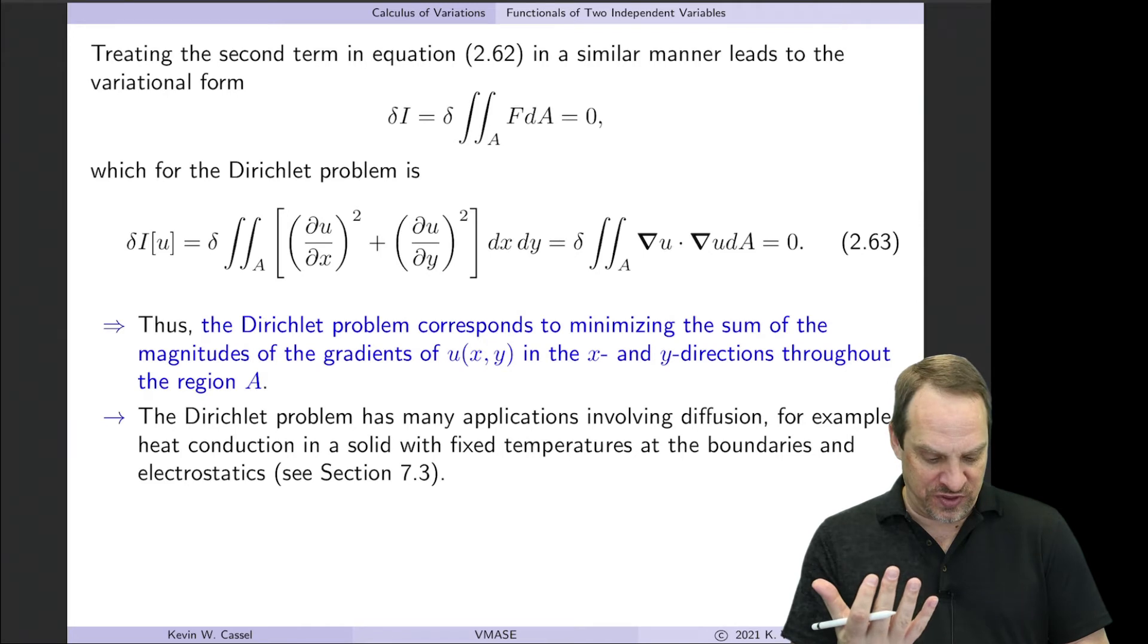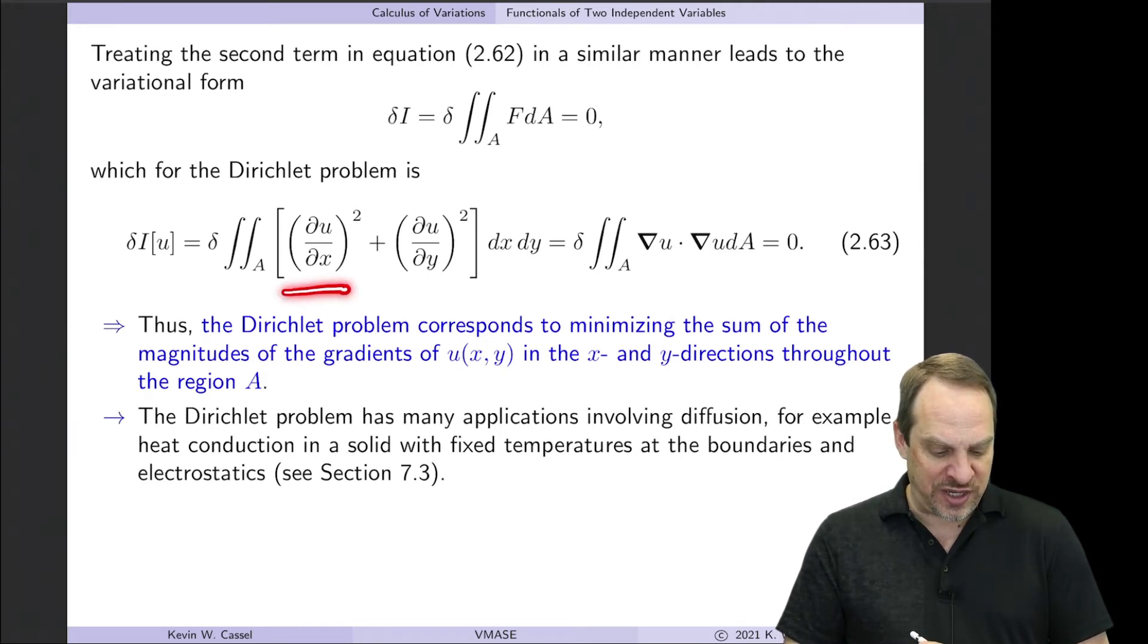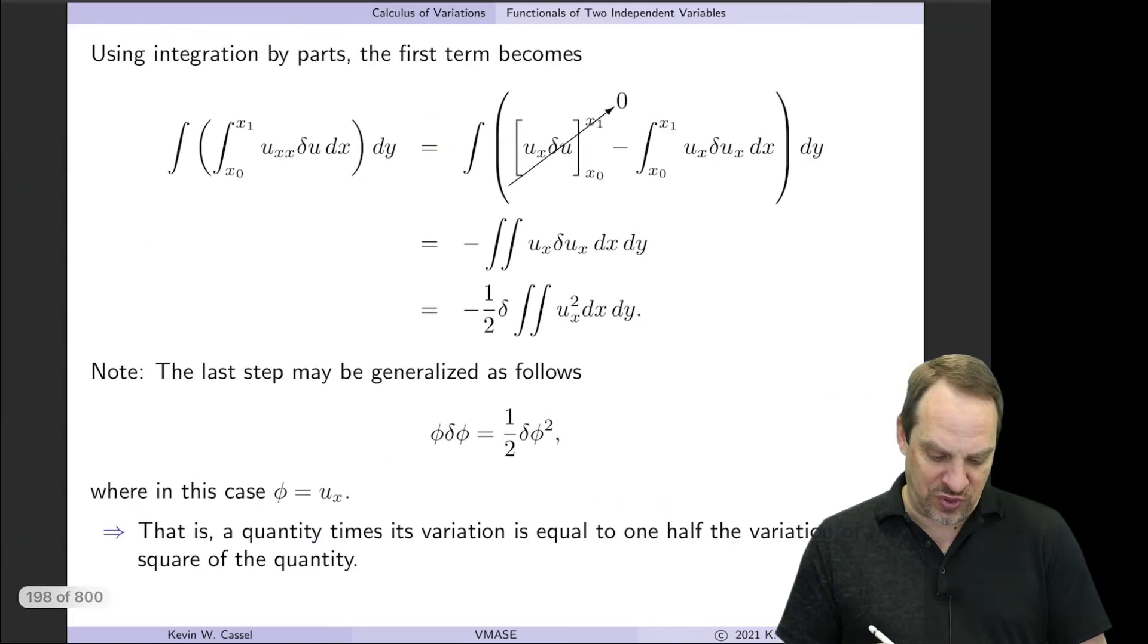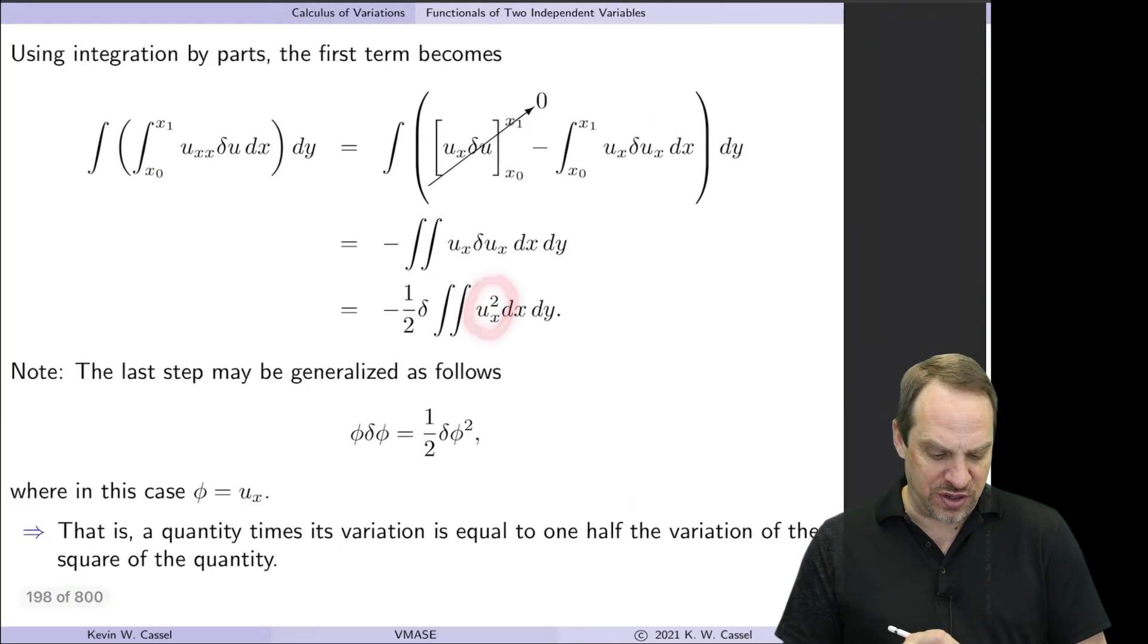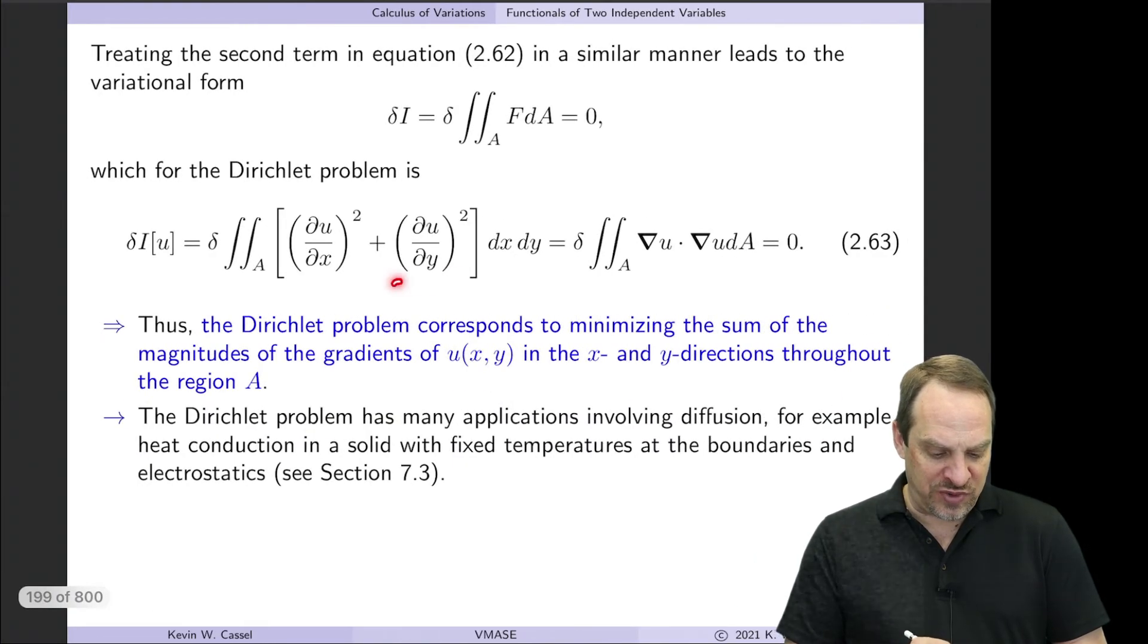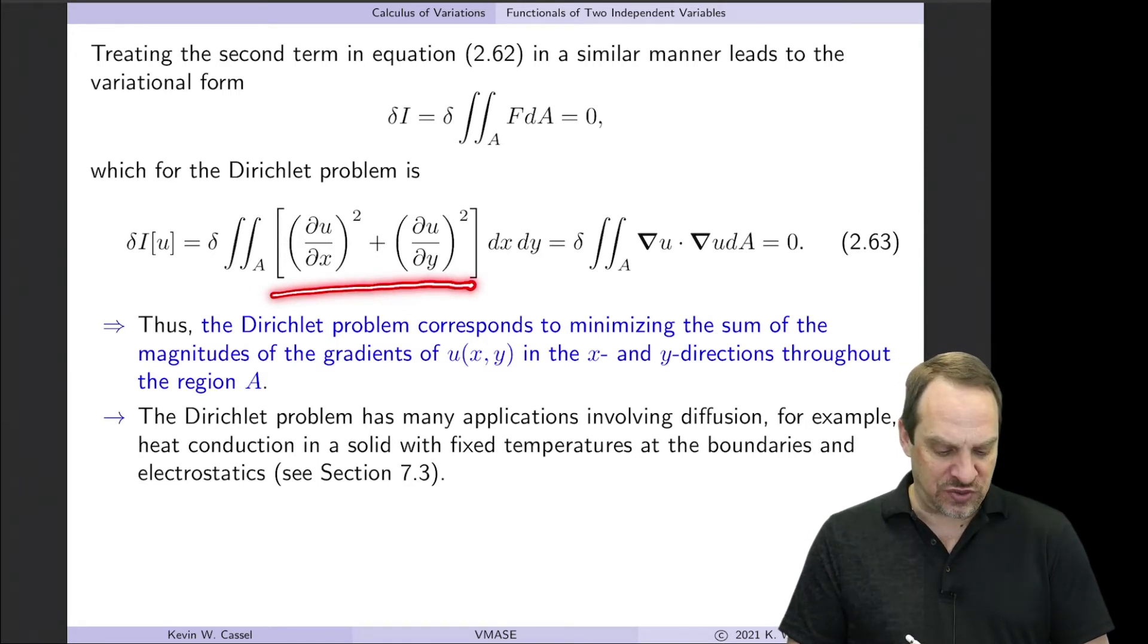It's the variation of the integral of capital F. And now I know what capital F is. So in the case of the Dirichlet problem, we have the Uₓ² term, which is what we got right here, Uₓ². And then from the y derivative term, we have a Uy² term as well. So the variation of the integral of the square of these partial derivatives of U with respect to x, and U with respect to y.